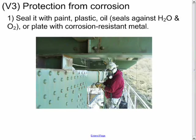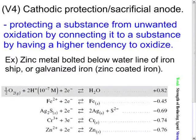Now there is one method of protection that does not involve sealing it, but it involves another oxidation reduction reaction. And that is known as cathodic protection or having a sacrificial anode, and that is the process of protecting the substance from unwanted oxidation by connecting it to a substance having a higher tendency to oxidize.